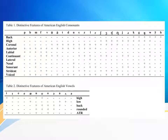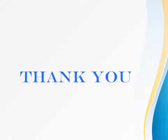Here are the tables of distinctive features of American English consonants and distinctive features of American English vowels. For example, /p/ is anterior and labial in Table 1. /f/ is anterior, labial, continuant, and strident in Table 1. And /e/ is low in Table 2. Thank you for watching — don't forget to like and subscribe, and comment down below if there are any questions.